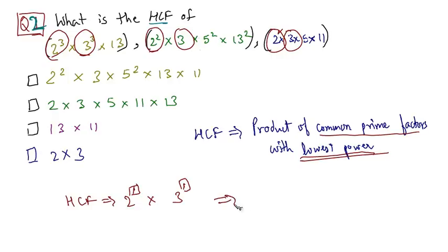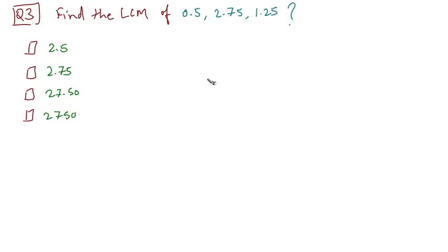What is the lowest power of 3 amongst all of these 3's? Again the lowest power of 3 is 1. So the answer is 2 into 3. Let's solve another question — find the LCM of 0.5, 2.75, and 1.25.